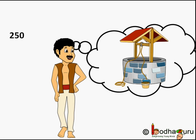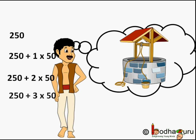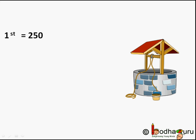Let us start with an example. Rajat needs to get a well dug. He calls a contractor whose team will dig the well. The contractor gave him the following pricing estimate: for the first meter the cost will be 250 rupees, and after that the cost will increase by 50 rupees per meter, because it becomes tougher to dig as you go deep — you find rocks and so on — so the cost per meter is increasing as you go deeper.